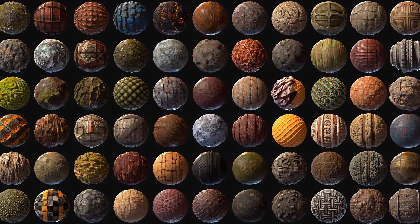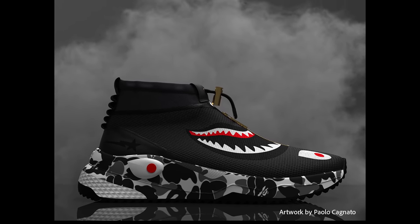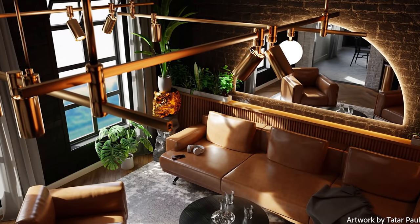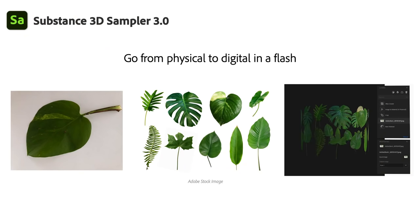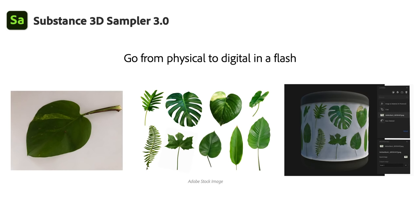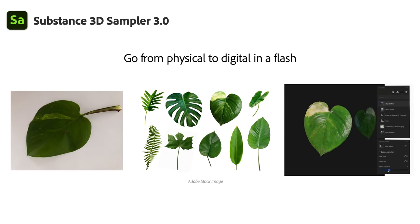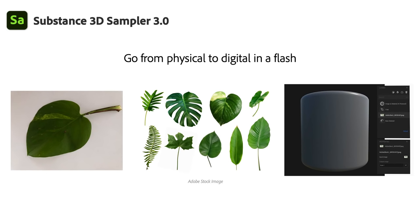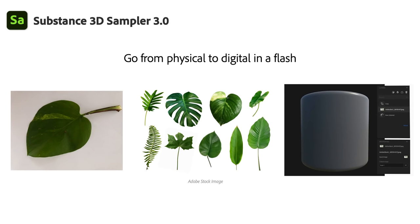Since last year we listened to the community, and we decided it was time to sit down and look. We concluded it was time for a change. With this release, we are refocusing Substance 3D Sampler on a simple mission: create 3D assets from physical to digital. It means that you can capture what's around you, or browse huge libraries like Adobe Stock, to create the digital version of your assets in a blink with Sampler. We defined an aggressive roadmap and are very happy to share the results today.